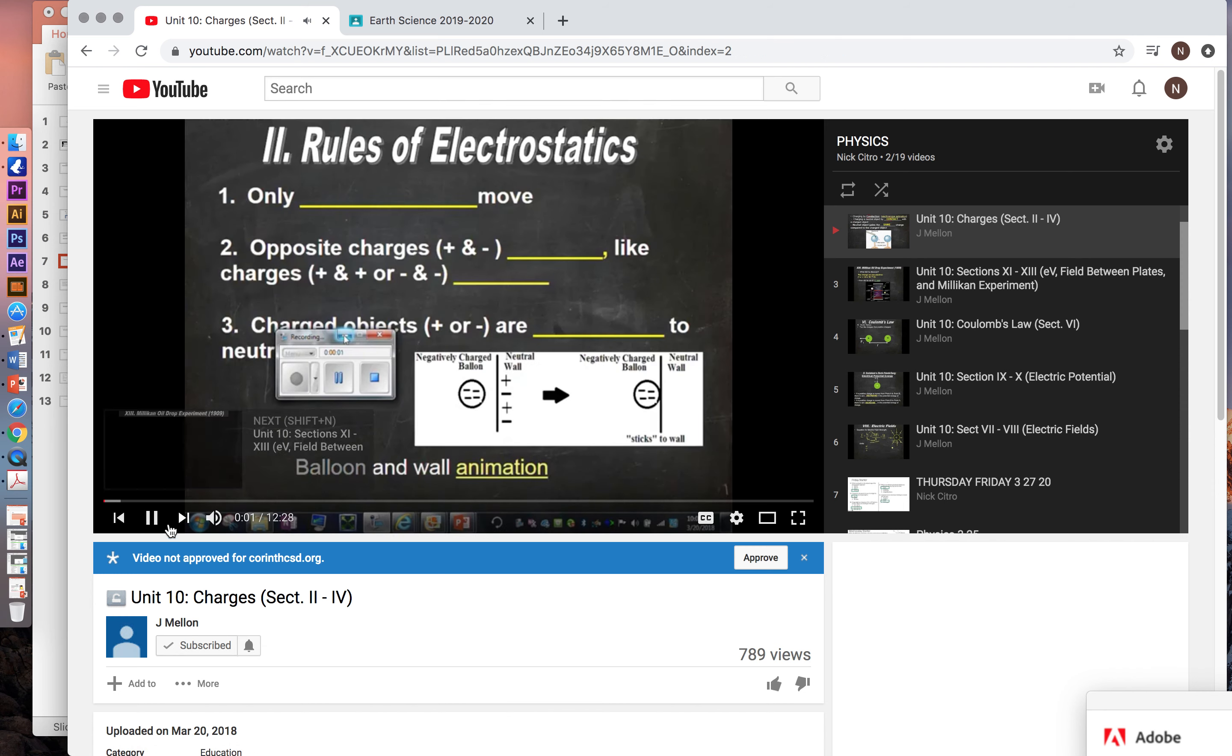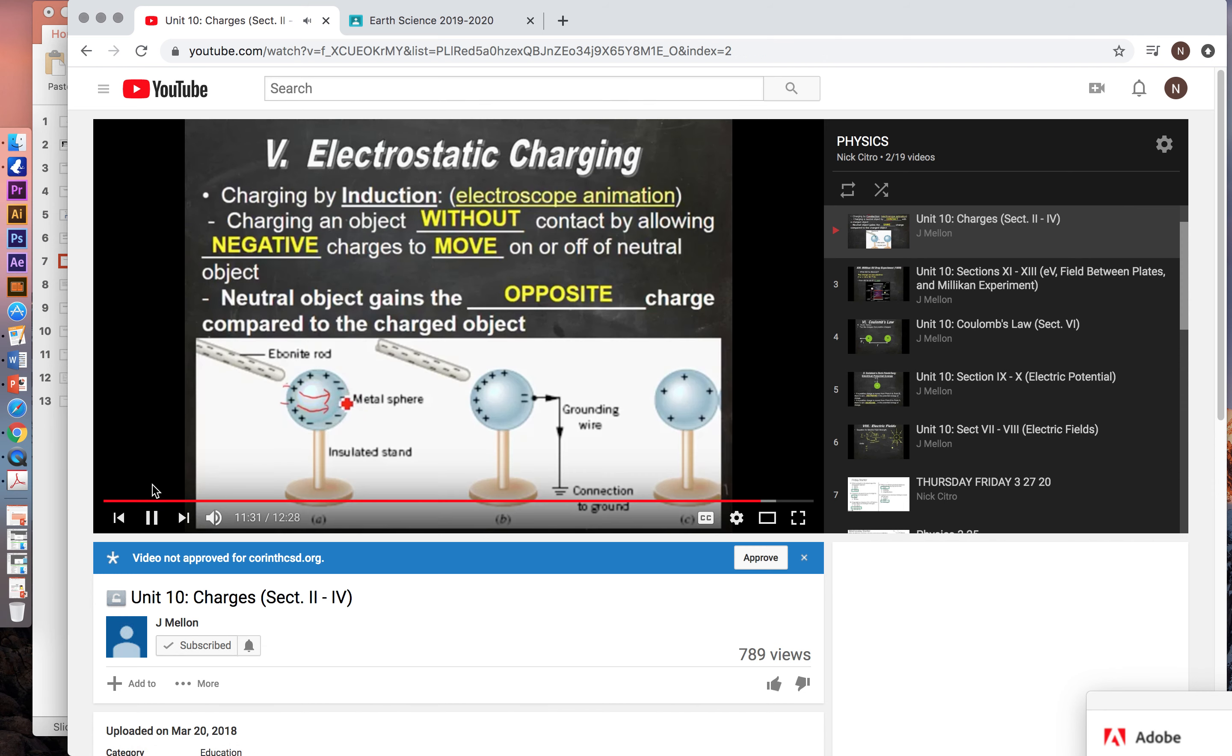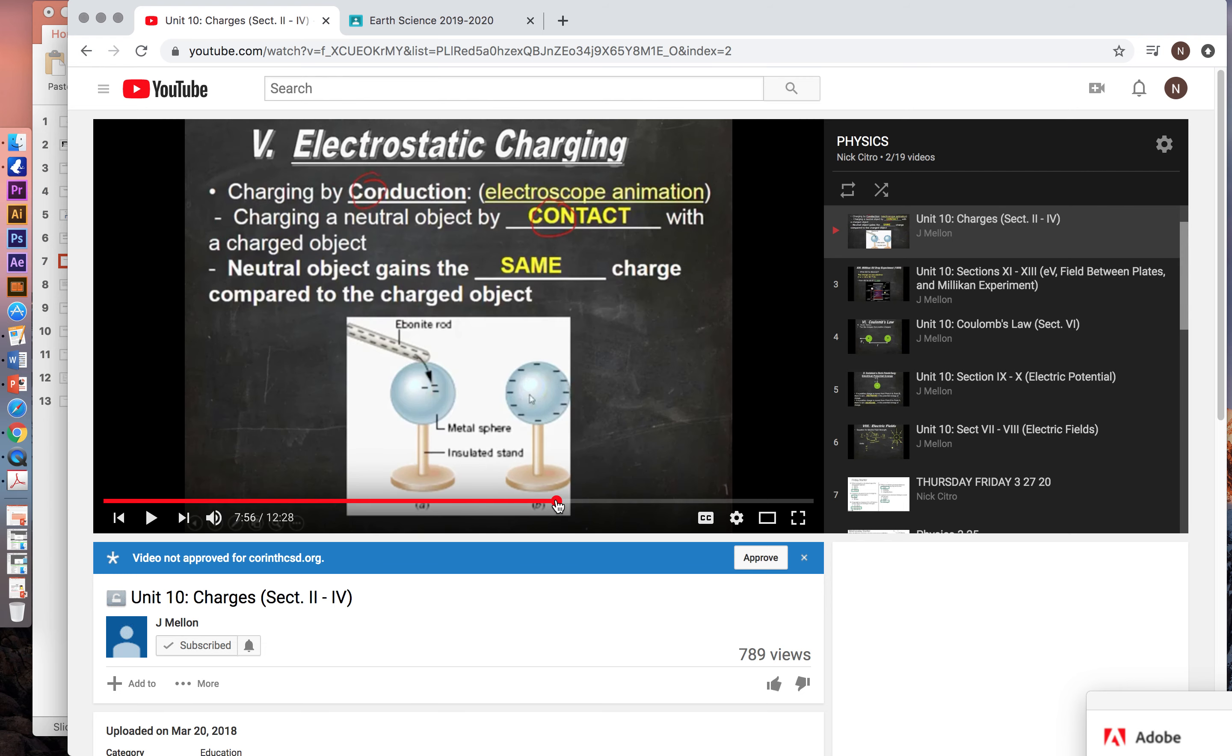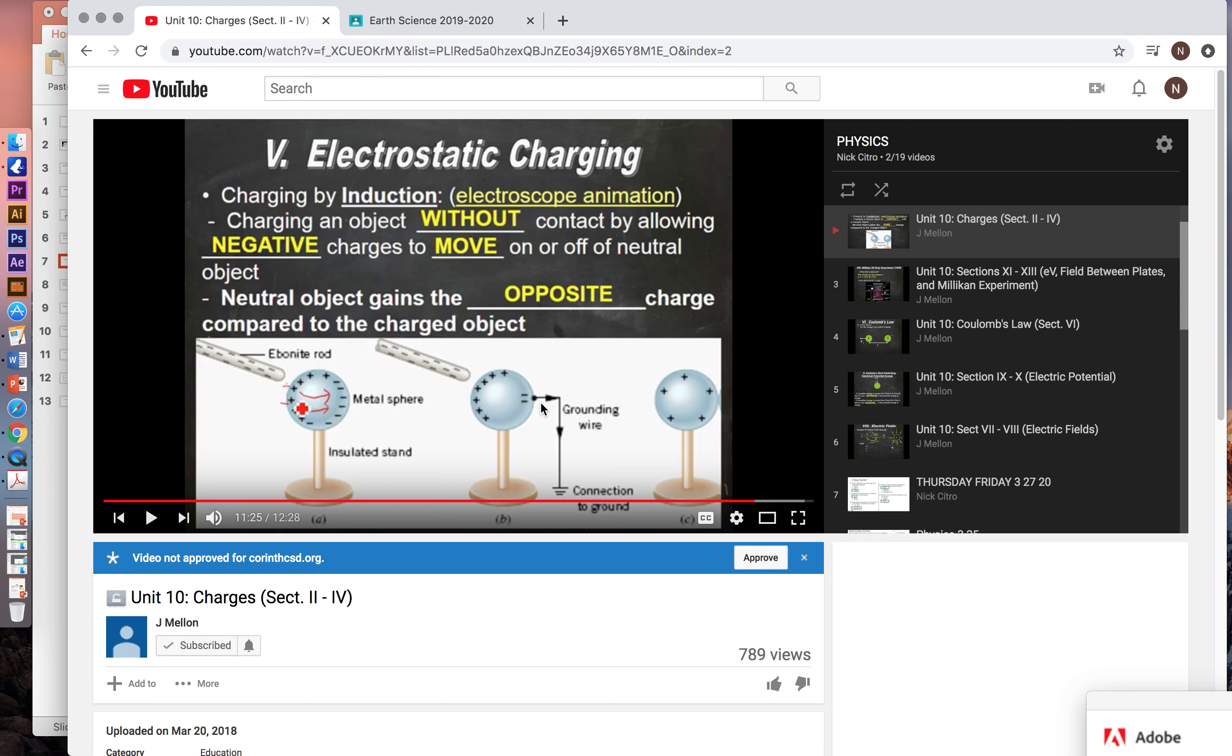Today, we're going to look at charges in general. Rules for electrostatics two all the way through five. Now, conduction and induction tends to be the most confusing thing. Basically, one touches the object to transfer electrons. The other does not. So in terms of induction, we charge without contact. We bring the rod close to a neutral object. And if we ground the object, that provides an avenue for those negative electrons to leave the object. And when that happens, and this is then unplugged, we then end up with a more positive object.